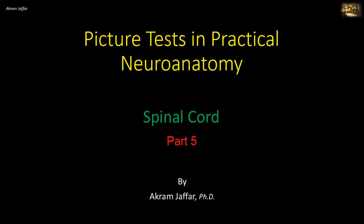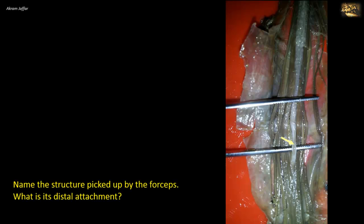Now I will deal with this spinal cord. Name the structure picked up by the forceps. What is its distal attachment? This is the filum terminale, shown in the dissection of the lower end of the spinal cord.